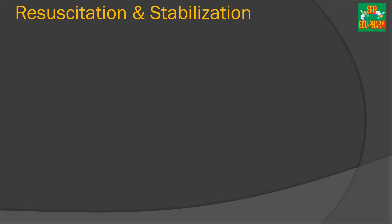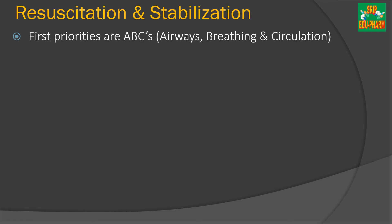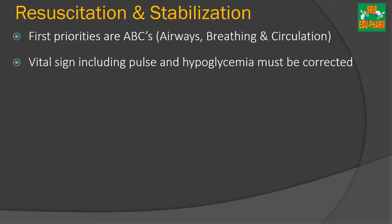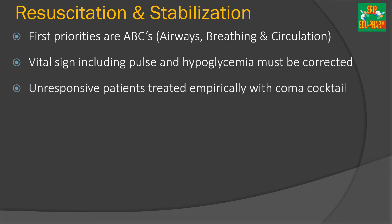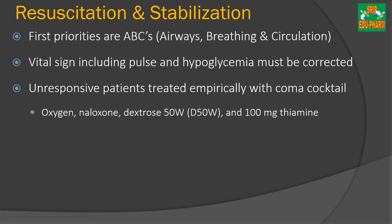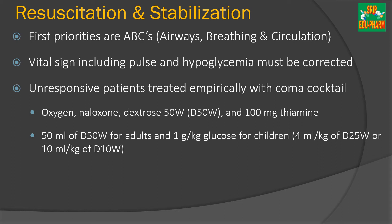First is resuscitation and stabilization. The first priorities are given to three things: airway, breathing, and circulation — denoted by ABC. Second, vital signs like pulse and hypoglycemia must be corrected. Third, if the patient is unresponsive, they can be treated with a coma cocktail, which includes oxygen, naloxone, dextrose (D50W), and thiamine 100 mg. The dose is 50 mL of D50W for adults and 1 gram per kg glucose for children. Thiamine is not usually given to children.